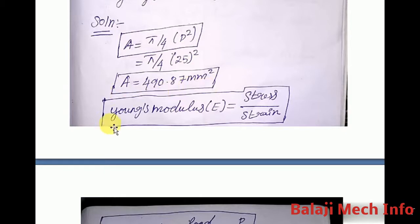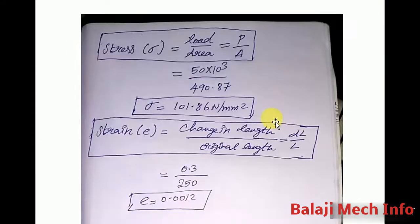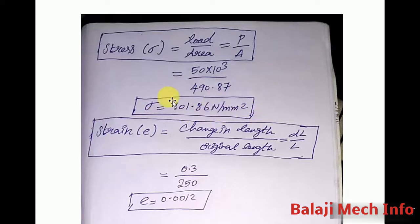Now let us find Young's Modulus E. The formula is E equals stress divided by strain. First, we calculate stress. Stress equals load divided by area. The area is (π/4) × 25² = 490.87 mm². Stress equals 50 × 10³ divided by 490.87, which gives 101.86 N/mm².